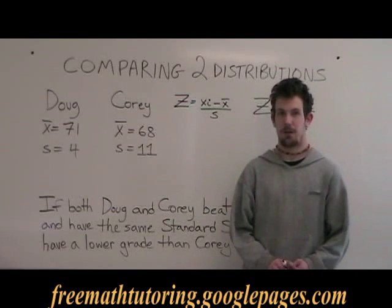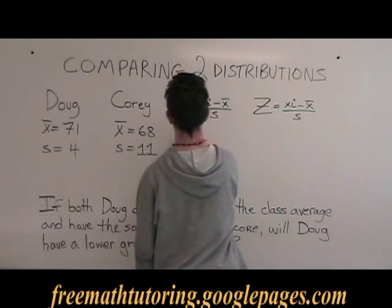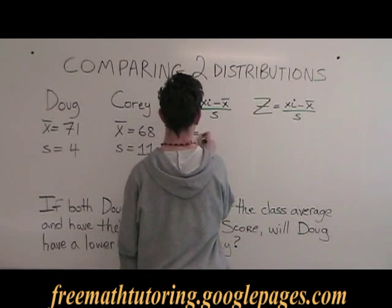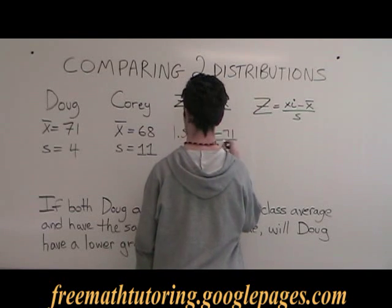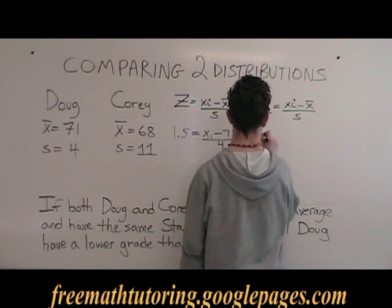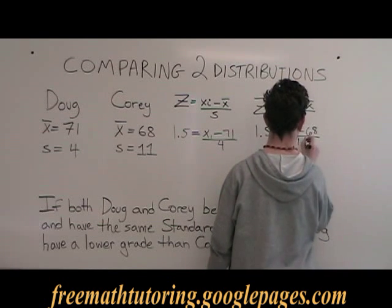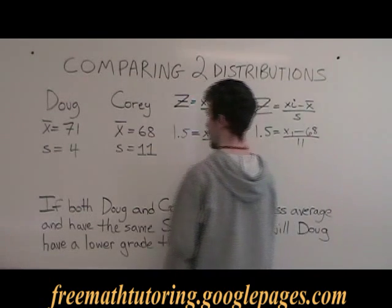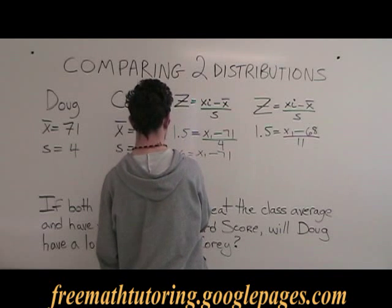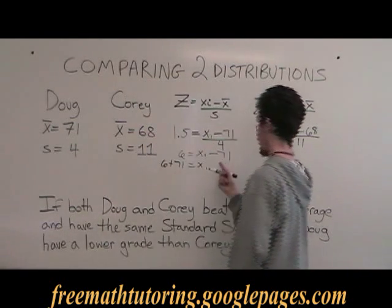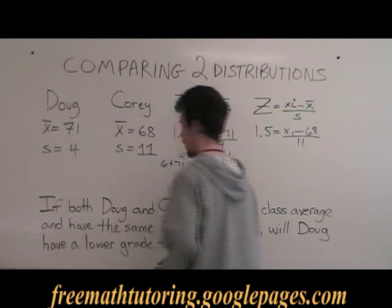If both Doug and Corey have a standard score of 1.5, let's plug it in. 1.5 times 4 is 6, equals x-sub-i minus 71. Bringing the negative 71 to the other side, Doug's mark is 77.